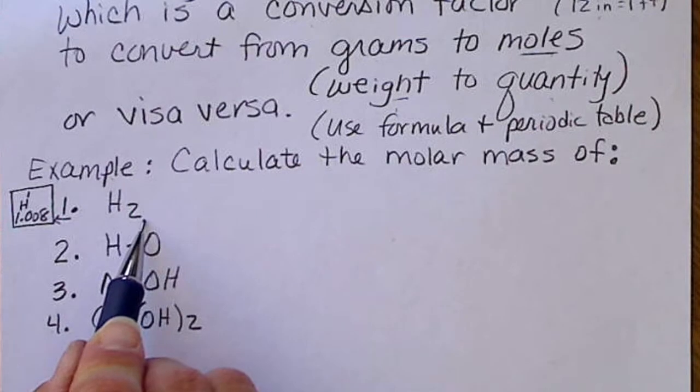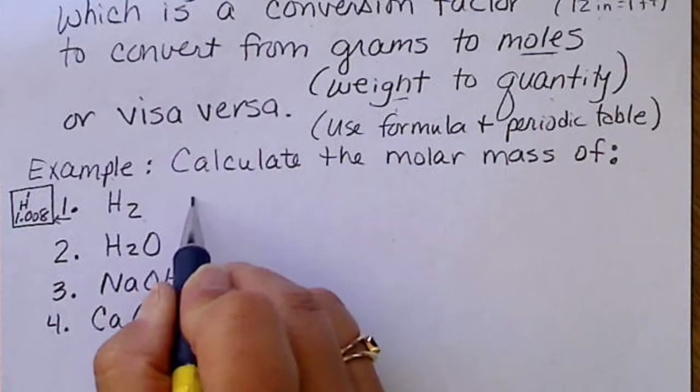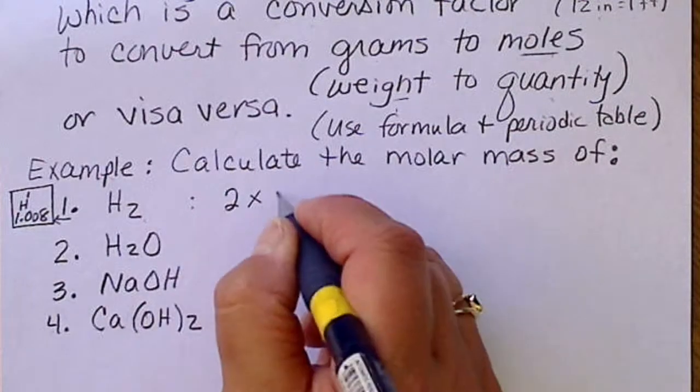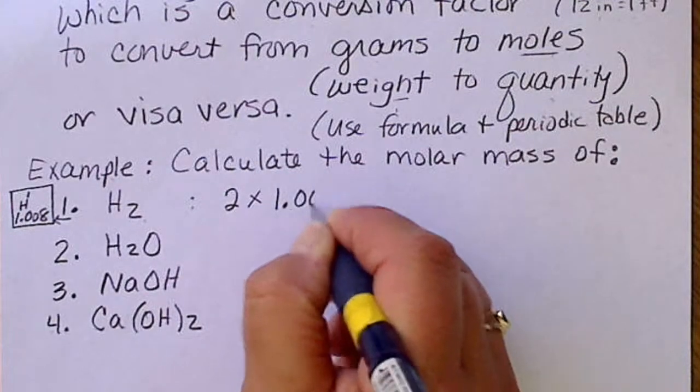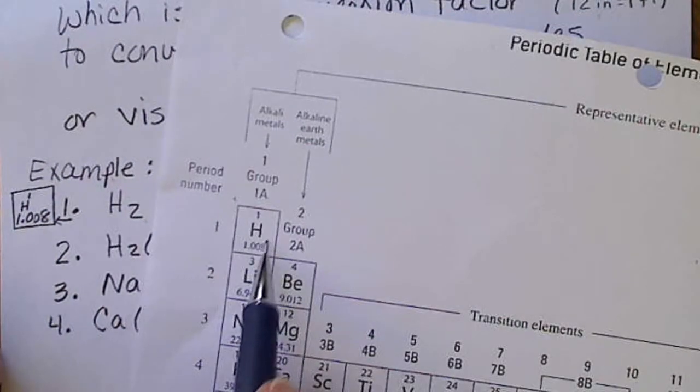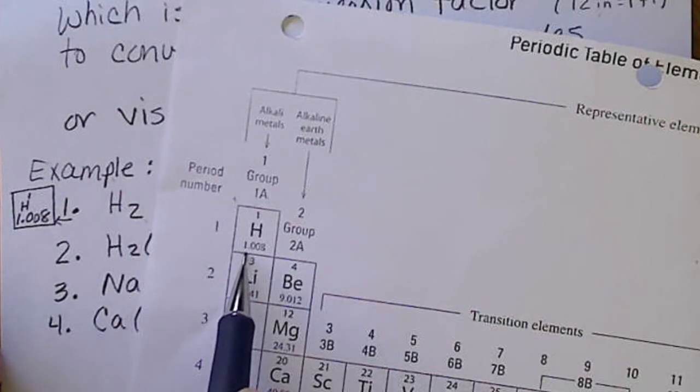It occurs in twos in nature, so the molar mass of this is going to be two times the mass of hydrogen. Hydrogen weighs 1.008. If we look at the periodic table, here's the symbol hydrogen, and if I zoomed in, we could see this was 1.008.